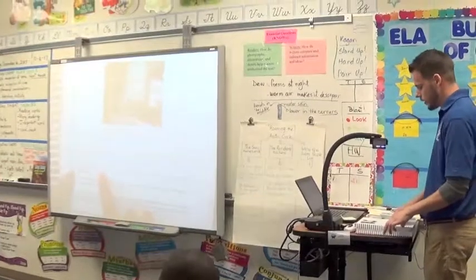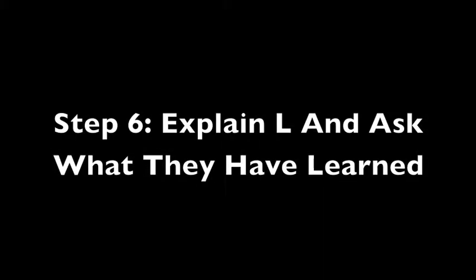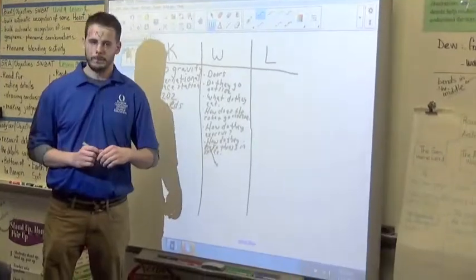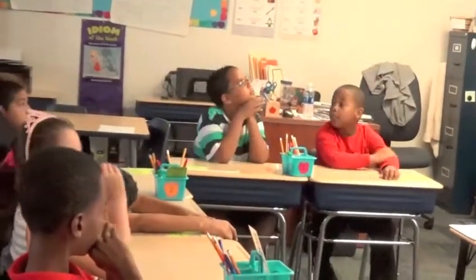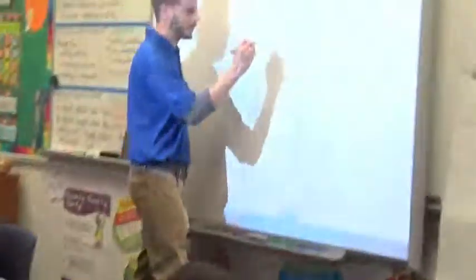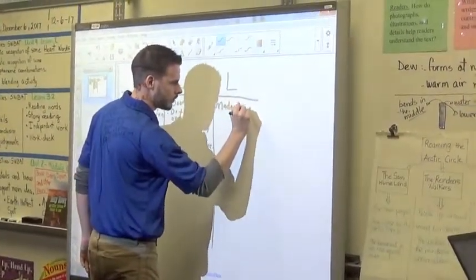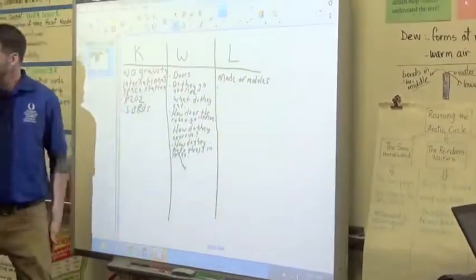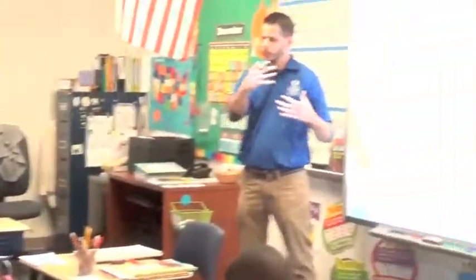The International Space Station is a large spacecraft. It orbits around Earth. It is home where astronauts live. So now we're on the L part of the KWL chart — what have you learned after I read that? What have you learned that you didn't know? That the ISS is made out of modules. The robot arm helps astronauts get around — it helps them with the building of things and helps them move around.